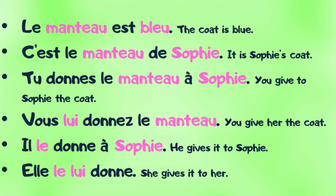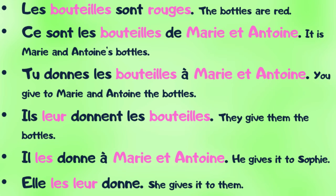Manteau is le because it's masculine. And as we said, Sophie became lui even if it's feminine. And now, another mix — the last one with plural forms. Les bouteilles sont rouges. Ce sont les bouteilles de Marie et Antoine. Tu donnes les bouteilles à Marie et Antoine. Il leur donne les bouteilles. Il les donne à Marie et Antoine. Elle les leur donne. Bouteilles — bottles — are plural, so it's les, regardless of gender. Antoine et Marie, it's leur, because it's plural, and still regardless of gender.